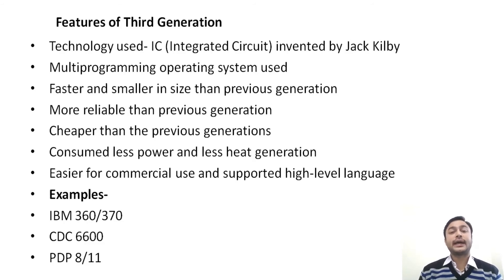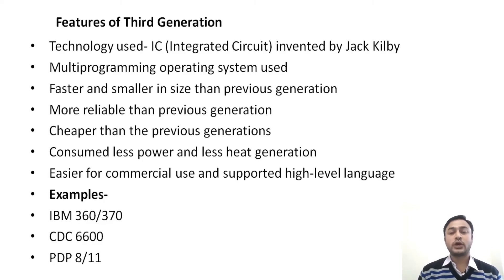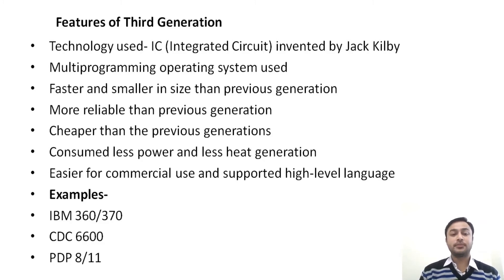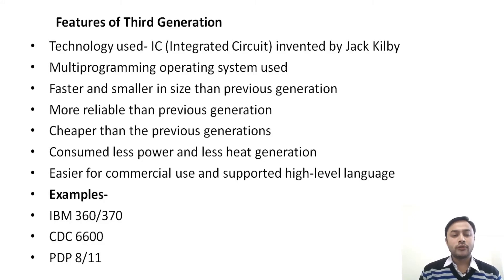In the third generation, the technology used was IC — integrated circuit — which was invented by Jack Kilby, who was also awarded the Nobel Prize for his work. This generation used a multiprogramming operating system. The computer was faster, smaller, more reliable, and cheaper than previous generations. It consumed less power and produced less heat. From this generation, computers became available for commercial use and supported high-level languages. Examples include IBM 360, IBM 370, CDC 6600, and PDP 8/11.